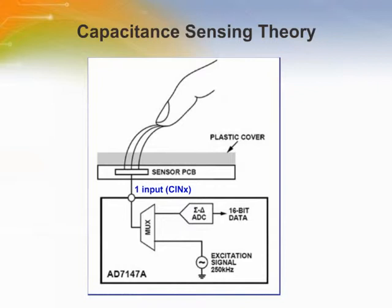The other plate of the capacitor is the sensor, measured by the AD7147. When a user approaches the sensor, the total capacitance associated with the sensor changes and is measured by the AD7147. If the change causes a set threshold to be exceeded, the AD7147 interprets this as a sensor activation.